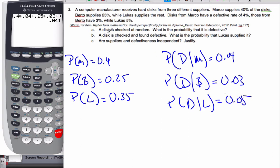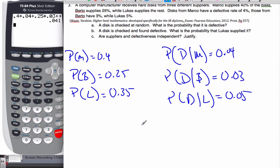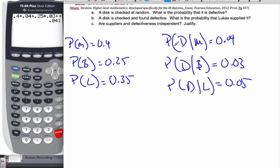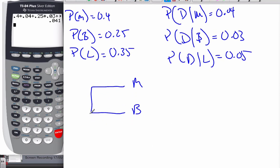Okay, so a disk is checked at random. What is the probability that it is defective? Well, to do this one, I am going to make a tree diagram, because when I have conditional probabilities, typically a tree diagram is the best option. Now, this tree will be a little bit bigger than what we've usually done, but this is going to be the probability of Marco, or Berto, or I could have Lucas, and this is 0.35, 0.25, and 0.4.